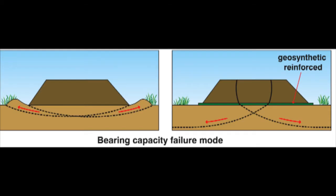Bearing capacity failure is where the subgrade is not strong enough to withstand the load from the embankment. The structure sinks and the subgrade heaves out to either side. A geosynthetic reinforcement layer improves the bearing capacity of the subgrade and changes the failure mode.